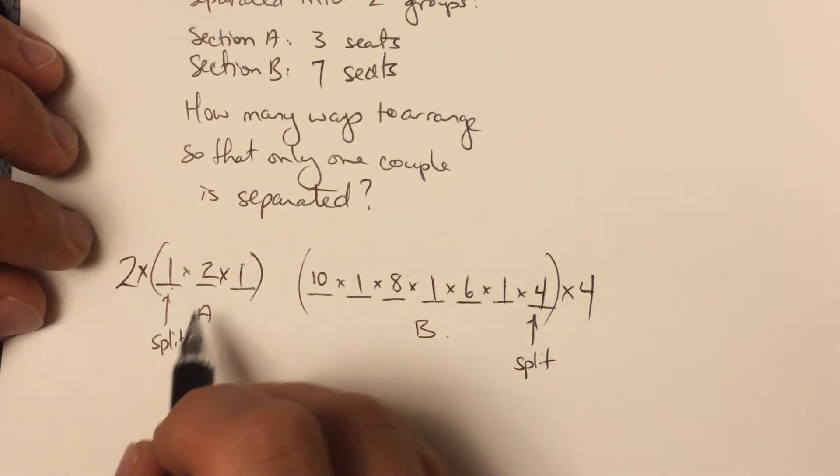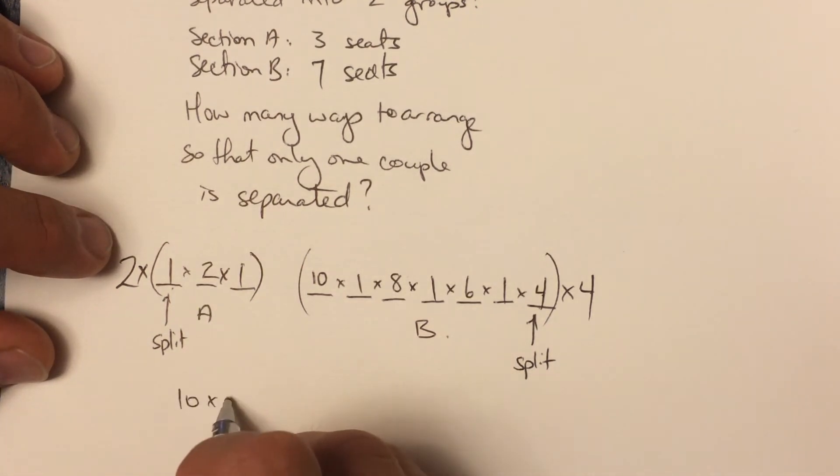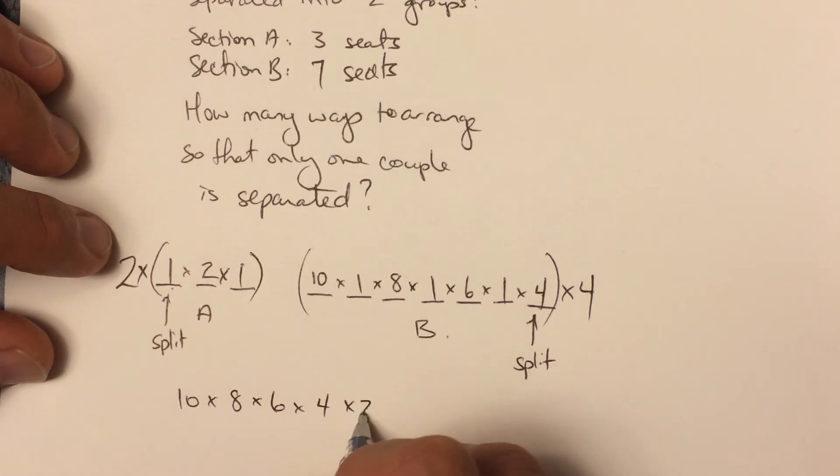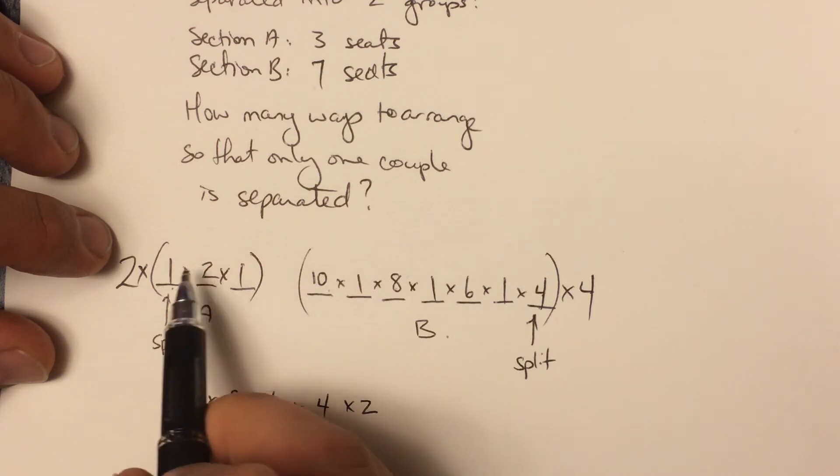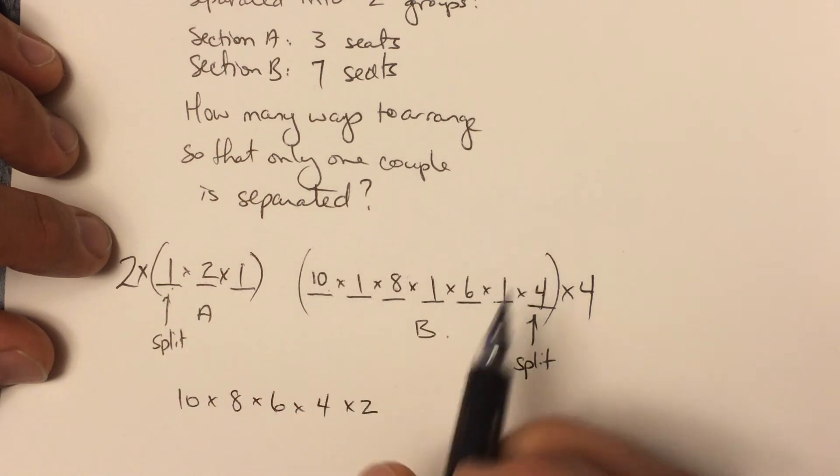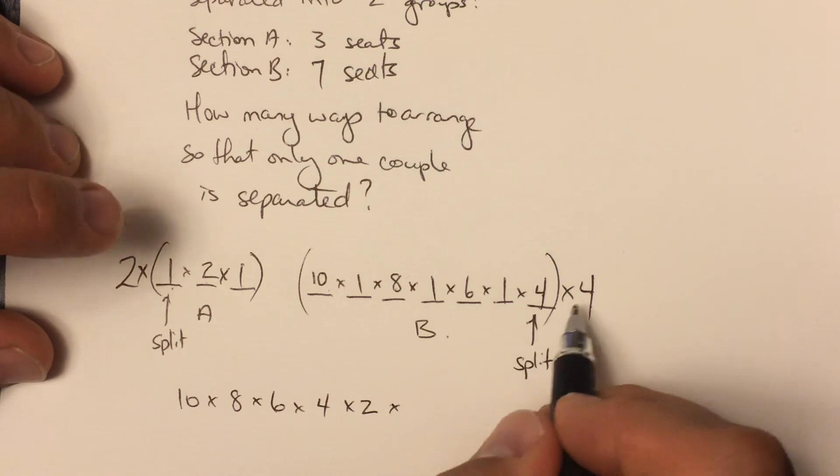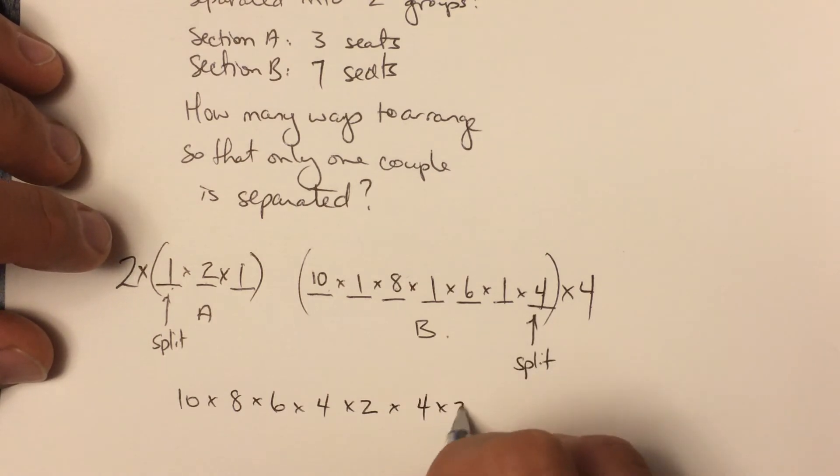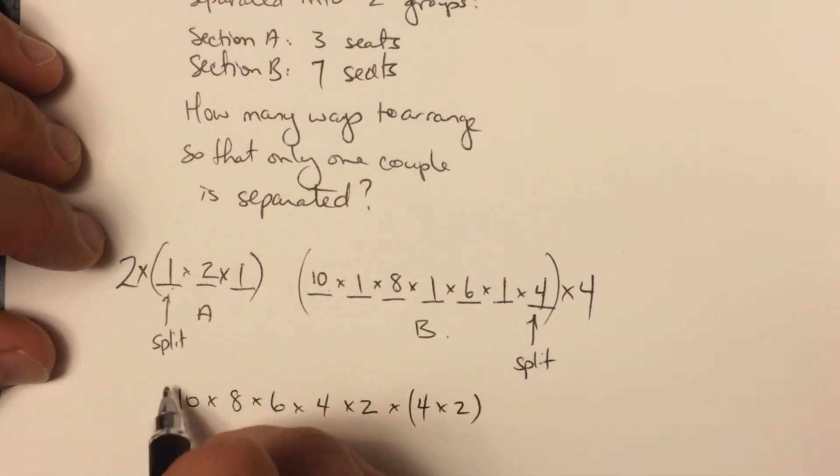If we multiply this whole thing together, that's 10 times 8 times 6 times 4 times 2. 10, 8, 6, 4, 2. Those are all the values inside of my brackets, and that whole thing is multiplied by 4 times 2. I just want to point out that this here is actually 5 factorial times 2 to the fifth.